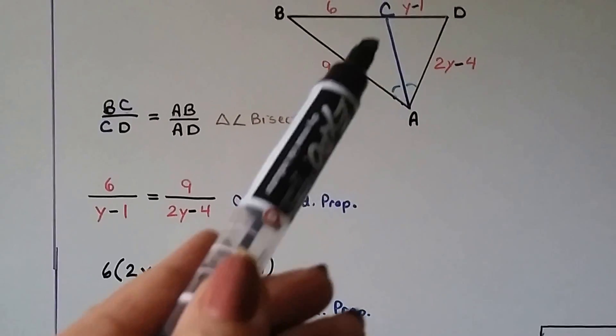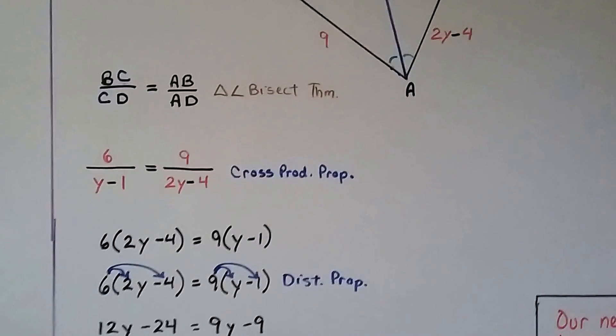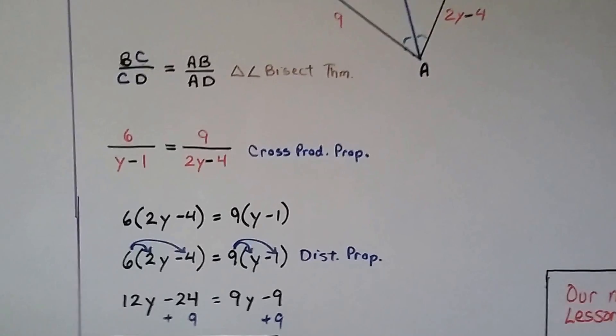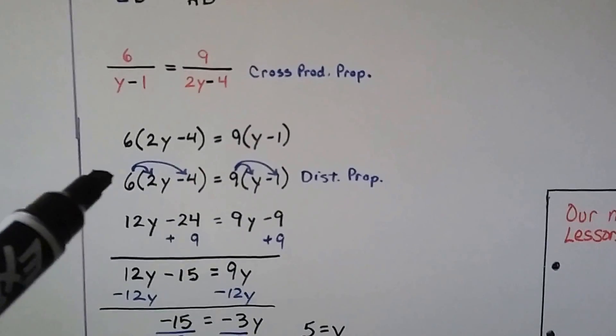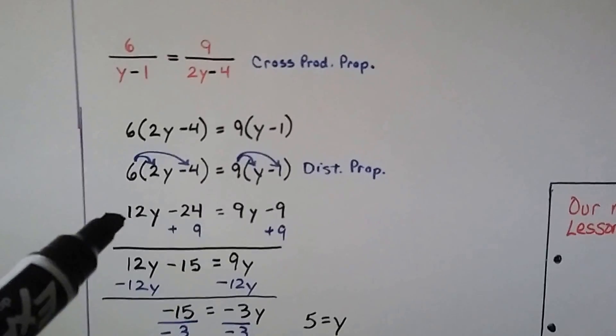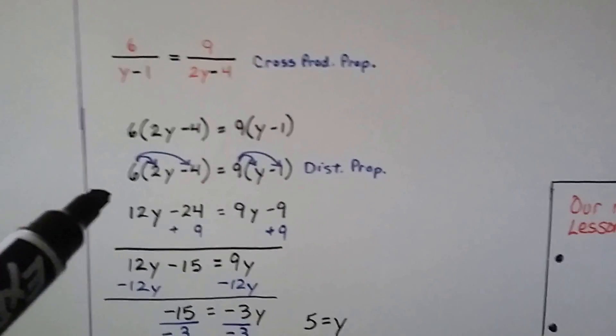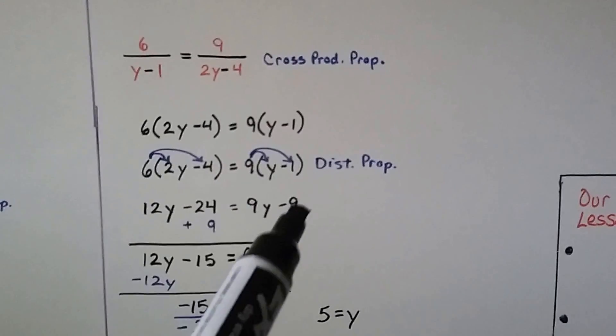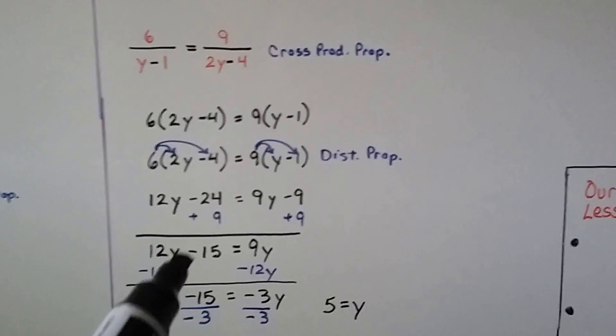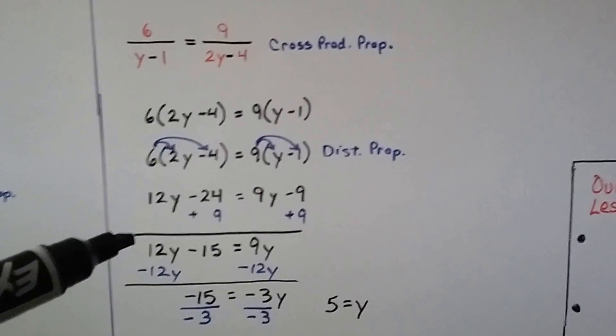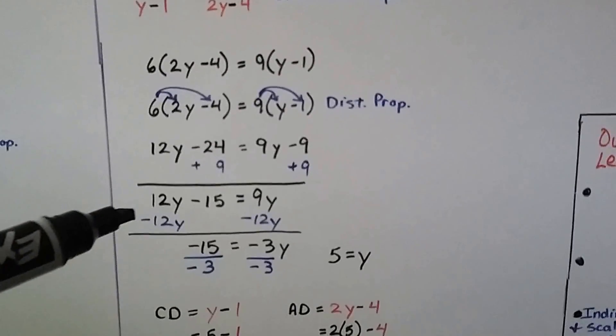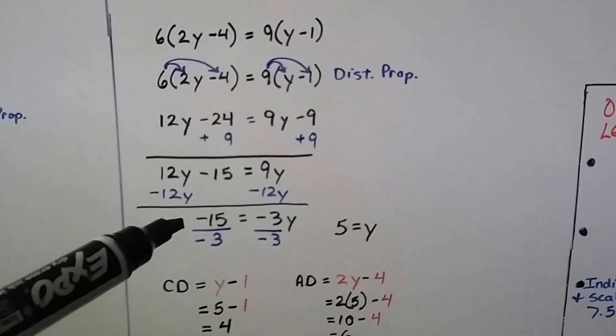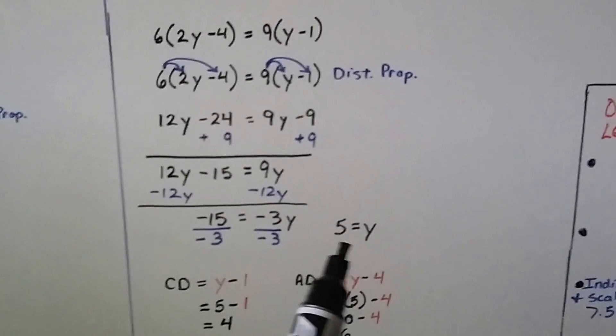We substitute in the amounts, the values, and we can use cross products property. We have 6 times 2y minus 4 is equal to 9 times y minus 1. We use the distributive property and we've got 12y minus 24 is equal to 9y minus 9. We add 9 to both sides and eliminate that. We've got 12y minus 15 is equal to 9y. We subtract the 12y from both sides and we have negative 15 equals negative 3y. We divide both sides by the coefficient negative 3 and we find that 5 is equal to y.